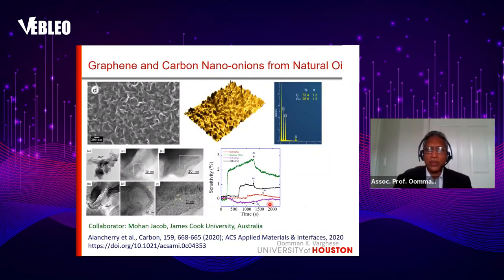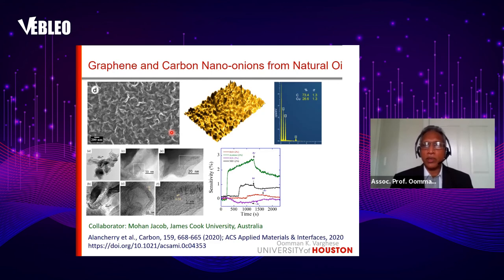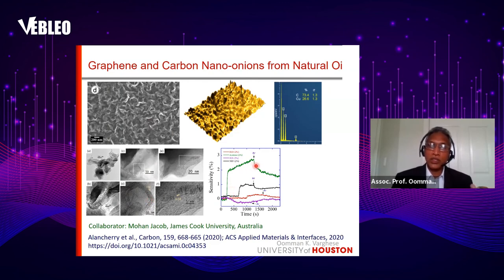Recently, we studied the volatile organic compound sensing properties of graphene films prepared from natural citrus oil or natural orange oil. This was work done in collaboration with Professor Jacob at James Cook University. The graphene films were prepared using plasma-assisted chemical vapor deposition. We found that these vertical graphene films have nano-onion structures embedded in them. These materials were found to be very useful for acetone detection, and acetone is also an indicator of diabetes and cancer.